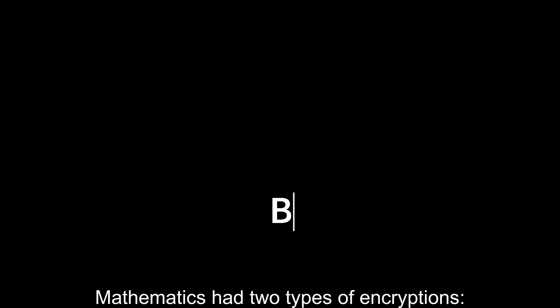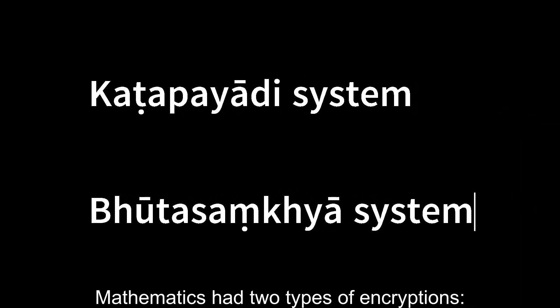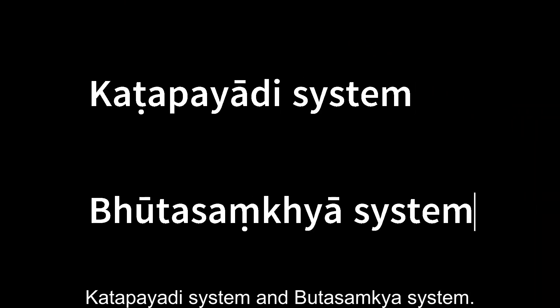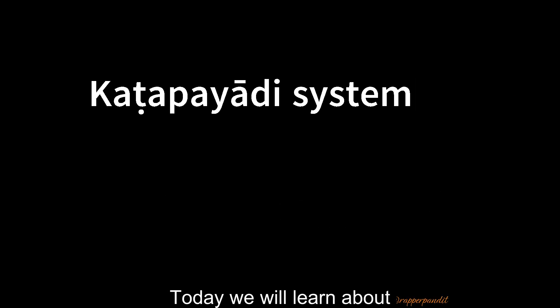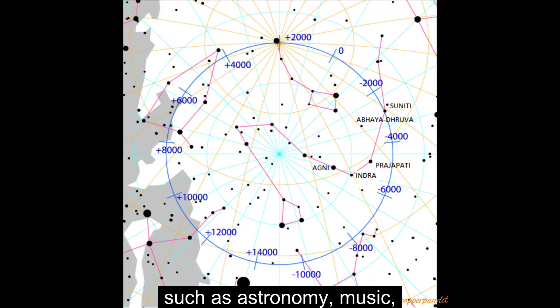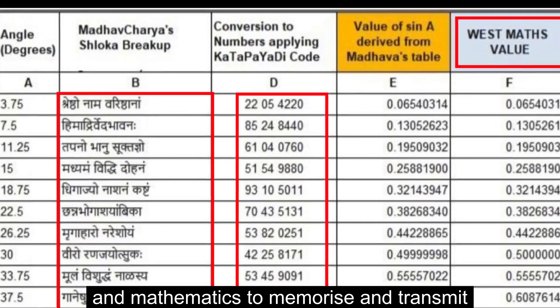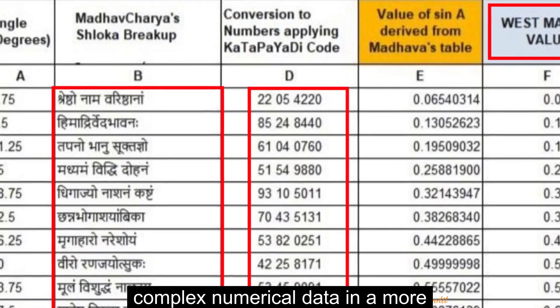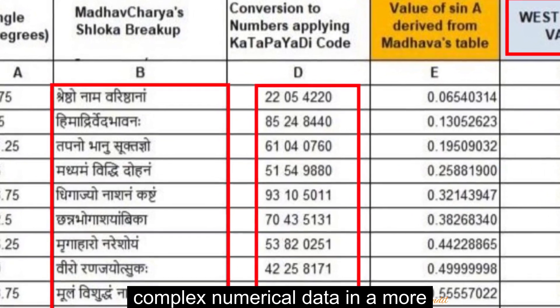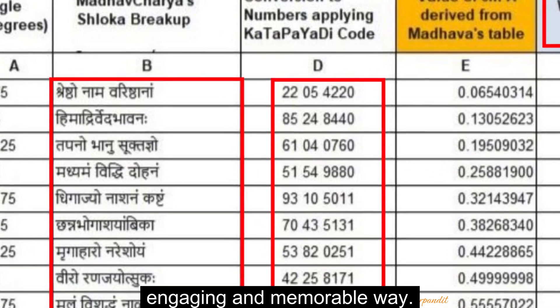Yes, you heard it right. Mathematics had two types of encryptions: the Kathapayadi system and the Bhutasamkhya system. Today we will learn about the Kathapayadi system, which was widely utilised in fields such as astronomy, music, and mathematics to memorise and transmit complex numerical data in a more engaging and memorable way.